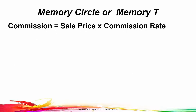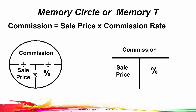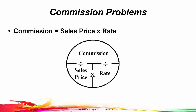When we deal with commissions, ask yourself which are the small dollars and which are the big dollars. The sales price compared to the commission is larger — the commission is always a percentage of the sales price. So in the memory circle, the commission on top equals the sales price times the percentage. Solving for commission, that's always equal to the sales price times the commission rate.